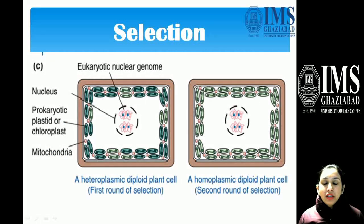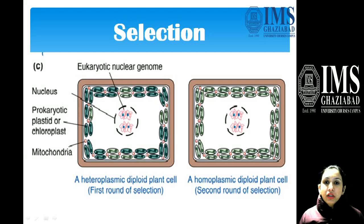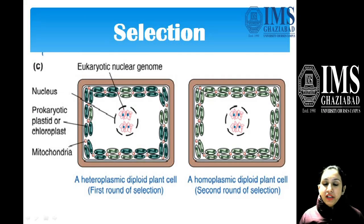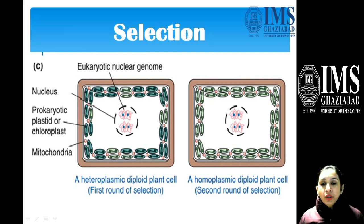As mentioned earlier, first a heteroplasmic polyploid plant is formed, and then this heteroplasmic state is resolved and converted into a homoplasmic polyploid plant. This is another important step of the selection process.